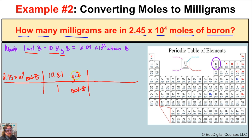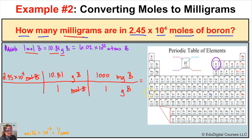That leaves us with grams of boron, but the question asks for milligrams. So we cancel grams of boron by putting it in the denominator and placing milligrams of boron in the numerator. The prefix milli means 10 to the negative third, or 1 over 1,000, meaning there are 1,000 milligrams in one gram. Grams of boron in the numerator and denominator cancel, leaving us with milligrams of boron as our final unit.